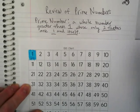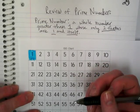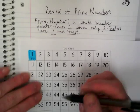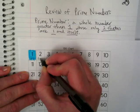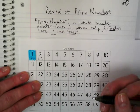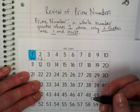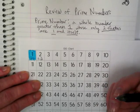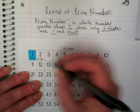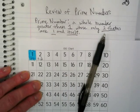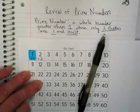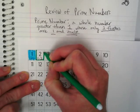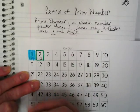Now let's look through the hundreds chart and see if we can find other numbers that are prime — where the only way to multiply and get it is one times itself. Well, we've got one times two. Is there any other way to multiply and get two? Nope — one times two and two times one are the same two numbers, so two only has two factors: one and itself. I'm going to use a different color to highlight that one.